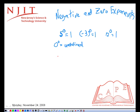Negative exponents indicate a reciprocal. For example, two to the power of negative three. This is the reciprocal of two to the three, which is one-eighth.